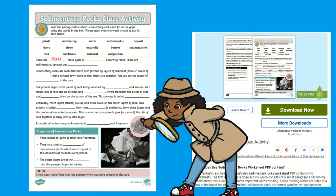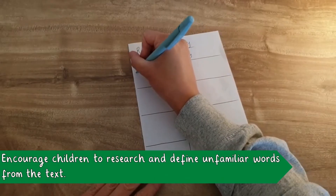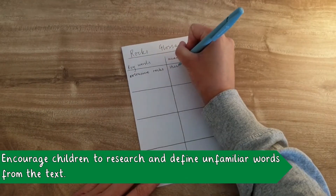Children will find the missing words are listed in a box at the top of the page, which they can use to place the correct word in the right space to complete the task. Towards the end of the worksheet you can find a properties box which children can complete and explore further.